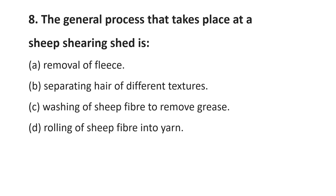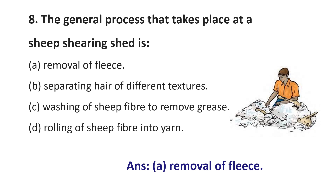Question number 8. The general process that takes place at a sheep shearing shed is: Option A, Removal of fleas; Option B, Separating hair of different textures; Option C, Washing of sheep fiber to remove grease; Option D, Rolling of sheep fiber into yarn. The answer is Option A, Removal of fleas. This process is known as shearing.